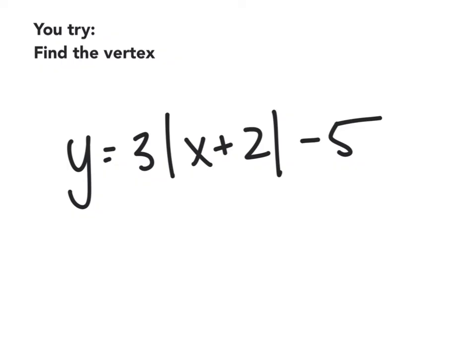Go ahead and try to see if you can remember from a couple slides back. Where will this vertex be? Will it be a max or a min? The vertex was at (-2, -5), and it was a minimum. Because this graph opened upward. Because this number is positive.